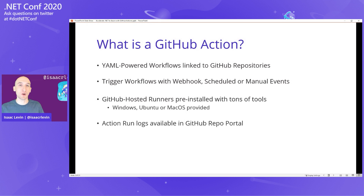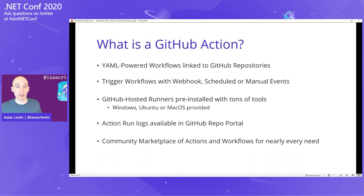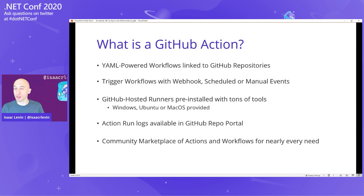Actions, when they run, generate logs like basically everything else on the planet. Those logs are available directly in the GitHub portal, so you can actually see the results of your build right there inline with your code. One of the greatest things about GitHub Actions is that there's a slew of custom workflows built by the community and organizations like the Azure team to cover every different scenario you can think of, which you can use as building blocks when building out your workflows.